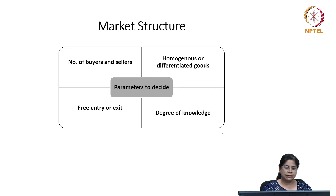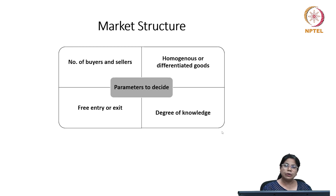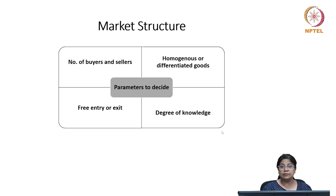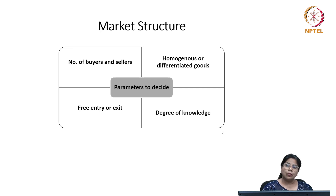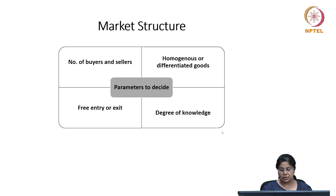Another important parameter in determining the type of market structure is free entry or exit. Producers should be able to enter the market very easily — there should not be any entry barriers if we are talking from the point of view of a competitive market. On the other hand, they should also be able to exit the market without much trouble. Whether entry and exit is smooth will influence the kind of market structure we are talking about. Degree of knowledge essentially highlights what kind of information exists with the producers and sellers. Our models essentially assume that there is perfect information and no information asymmetry.